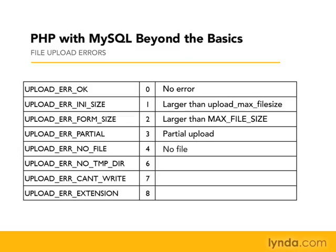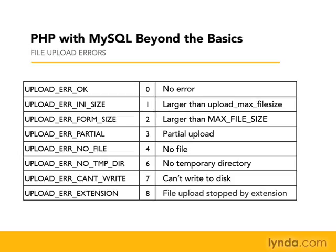Error four means no file was sent at all. Error number five is missing from the sequence — that's an old error that's gone now. Error number six is that there's no temporary directory. Number seven means we can't write to the disk — there's a read/write or permissions problem. And the last one is a bit obscure: it says some kind of extension is stopping the file upload, so you'd know to troubleshoot your extensions.